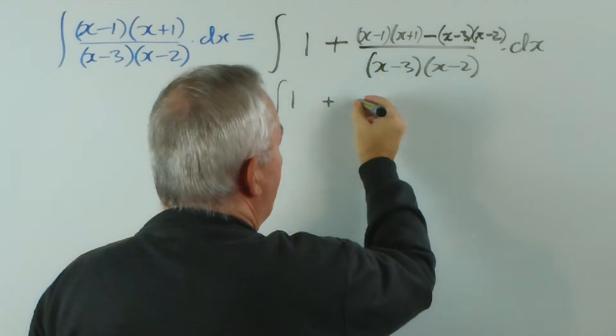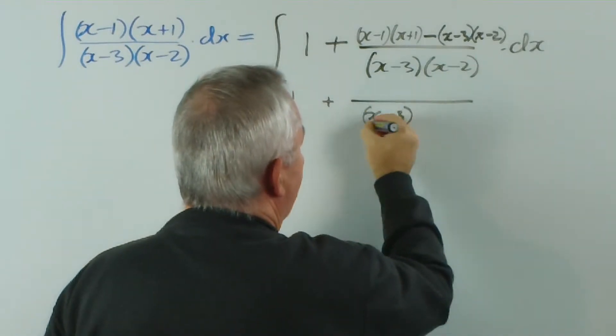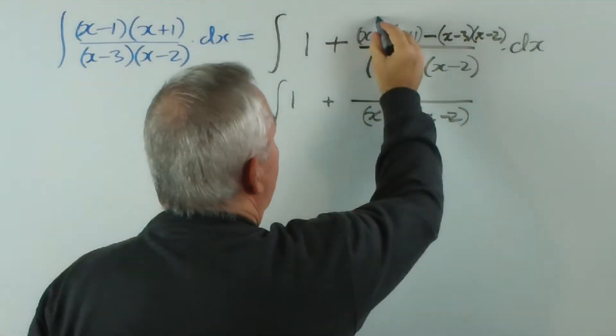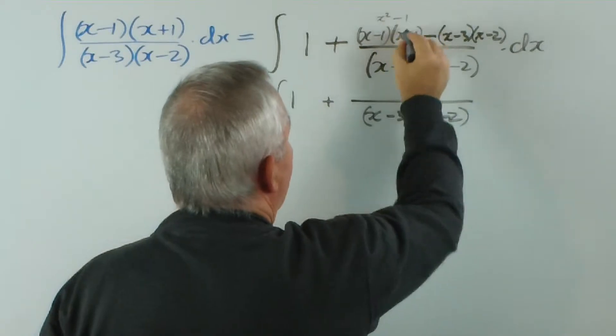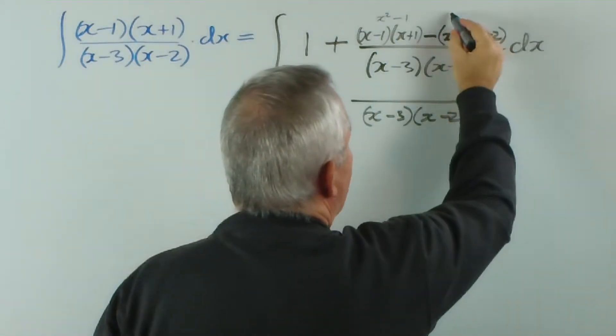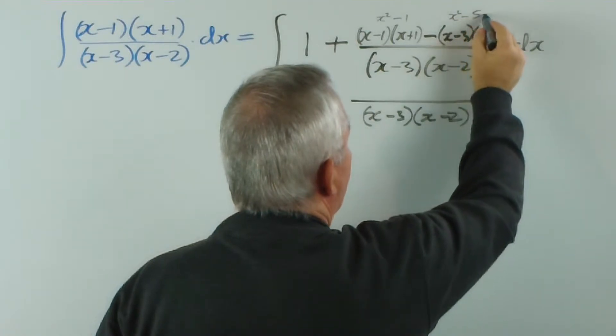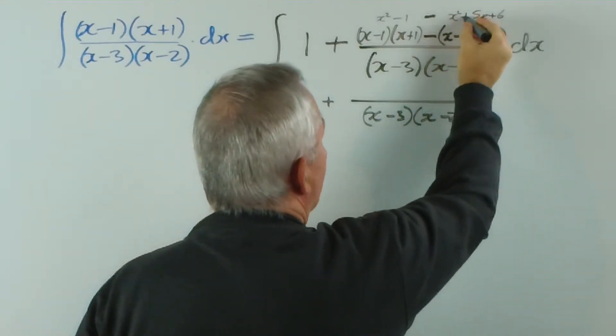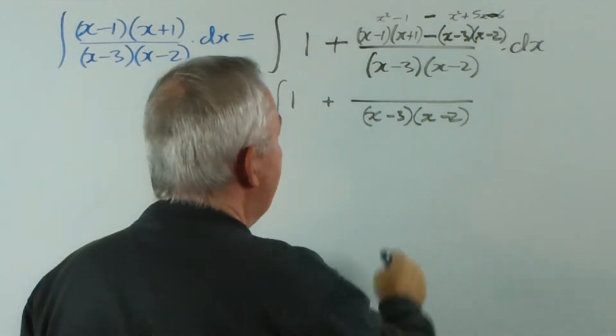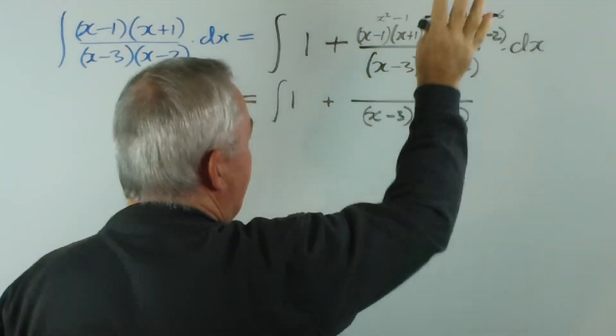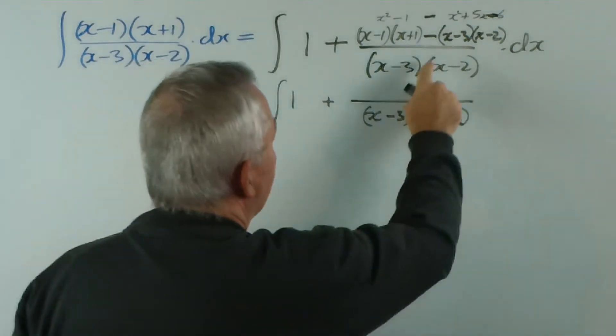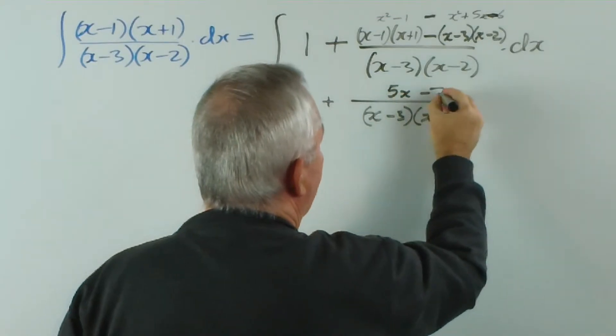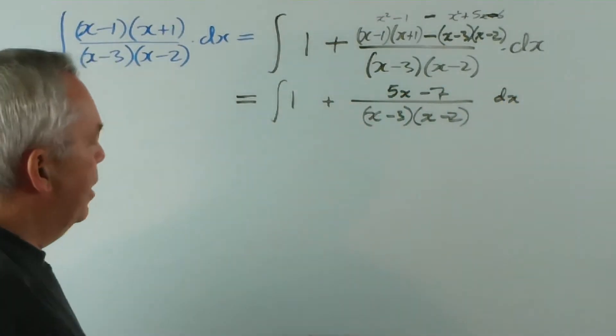Now let's try and resolve what's on the top here. I have x minus three, x minus two in the denominator. This will give me x squared minus one. This will give me x squared minus five x plus six. But there's a negative sign, so it's going to be minus plus minus. X squared minus x squared disappears, which is the whole aim of the exercise. And here we have five x minus seven dx. So we've resolved that numerator quite nicely.